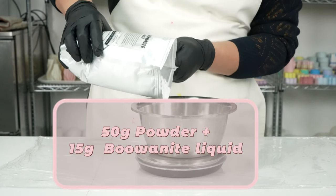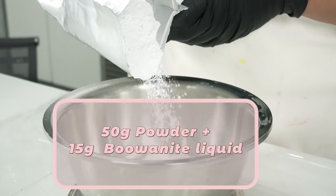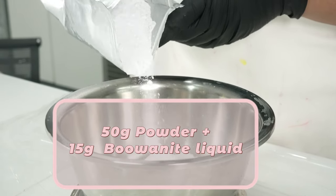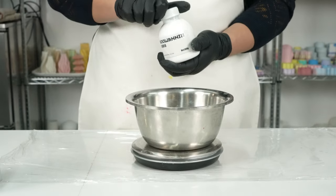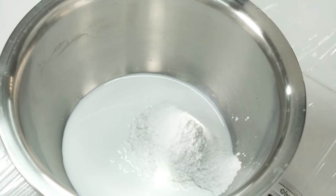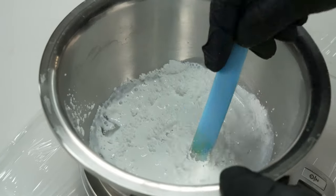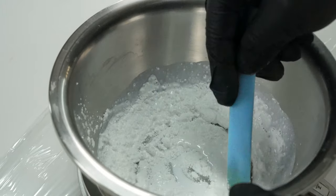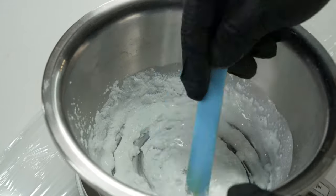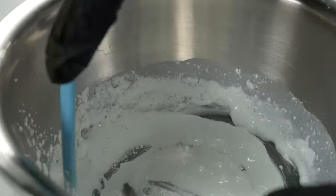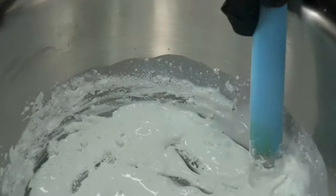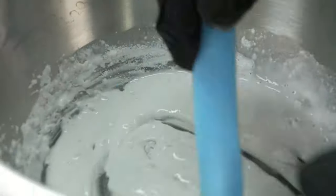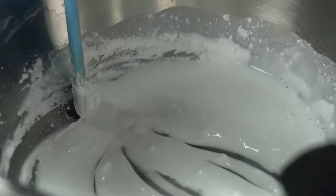To get started, the first step is to mix 50 grams of powder and 15 grams of buonite liquid. It's important to mix them well to ensure a smooth consistency. Use a clean, dry mixing container to avoid any unwanted impurities. Start by pouring the powder into the container, then add the liquid gradually while stirring.